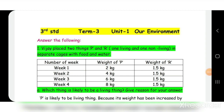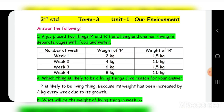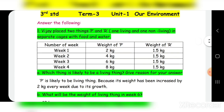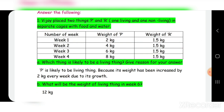Answer the following. First: Vijay placed two things, P and R — one living and one non-living — in separate cages with food and water, and observed them for four weeks. The weight of P in week one is 2 kg, week two 4 kg, week three 6 kg, and week four 8 kg. The weight of R remains the same at 1.5 kg for all four weeks. P is likely to be a living thing because its weight increased by 2 kg every week due to growth. The weight of the living thing in week six would be 12 kg.